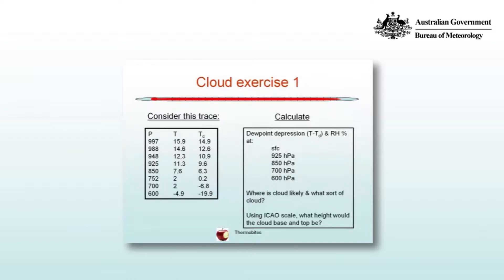As a first exercise, consider the following trace from 997 hectopascals to 600 hectopascals. Plot the trace on a skew-T log-P aerological diagram, then calculate the dewpoint depression at the surface, 925, 850, 700, and 600 hectopascals. Assess where cloud is likely and what sort of cloud it is, then work out the cloud base and top using the ICAO scale provided on the left-hand side of the diagram.